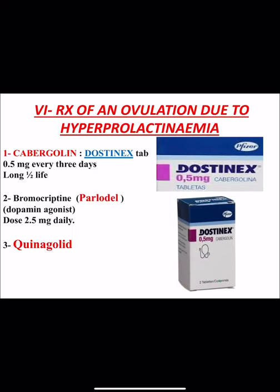For anovulation due to hyperprolactinemia, we give dopamine agonists. Examples include cabergoline (Dostinex) 0.5 mg every three days for four to six weeks, and bromocriptine (Parlodel) 2.5 mg twice daily for four weeks, though this drug is associated with undesirable side effects like vomiting, hypotension, and headache. A third option is quinagolide. Treatment is monitored by serum prolactin on day 2 of the cycle. If prolactin remains elevated despite treatment, pituitary adenoma must be considered and MRI of the brain performed.